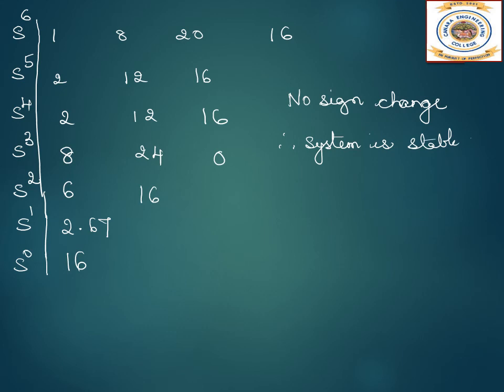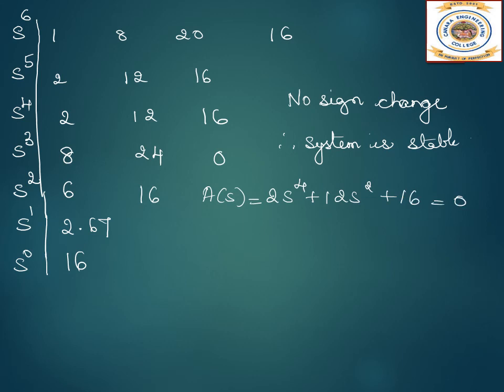The system is stable, but we had a full row of zeros, so we need to find the frequency of oscillation. We use the auxiliary equation: 2s⁴ + 12s² + 16 = 0, and find its roots.